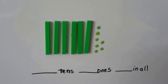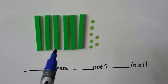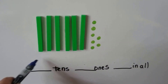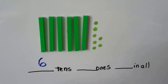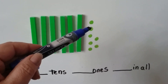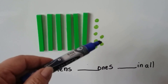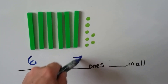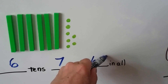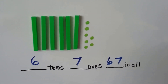How many tens do we see? One, two, three, four, five, six. And seven ones. We have six tens. We have seven ones. We have 67 in all.